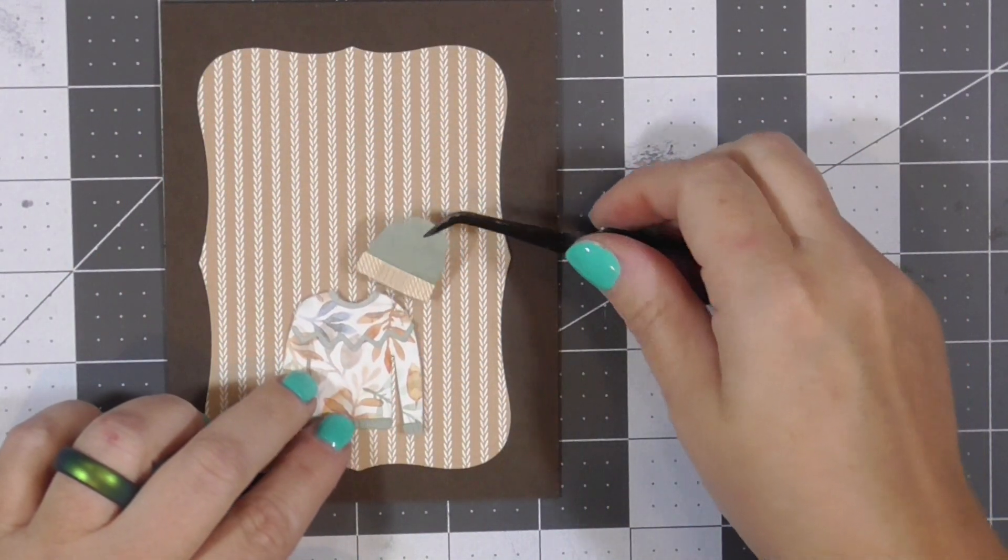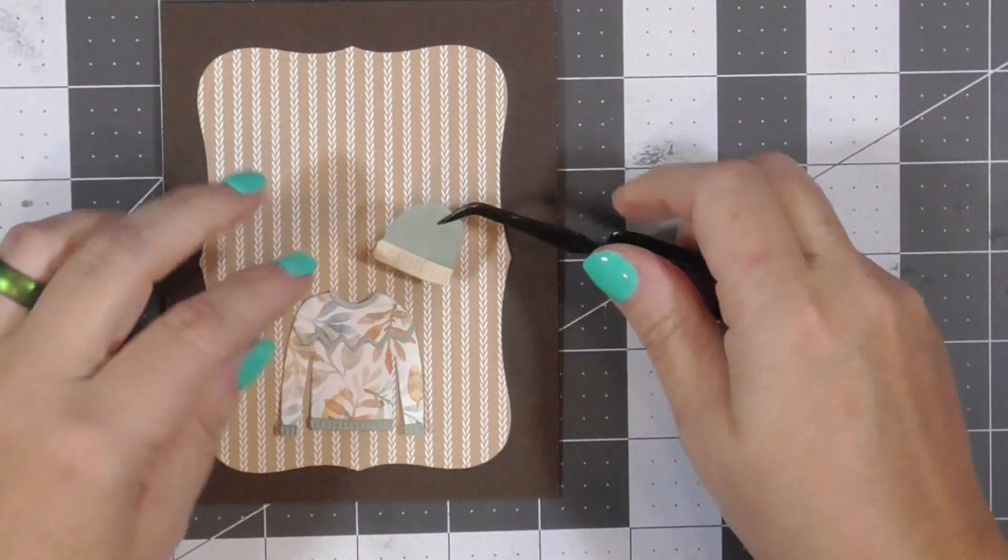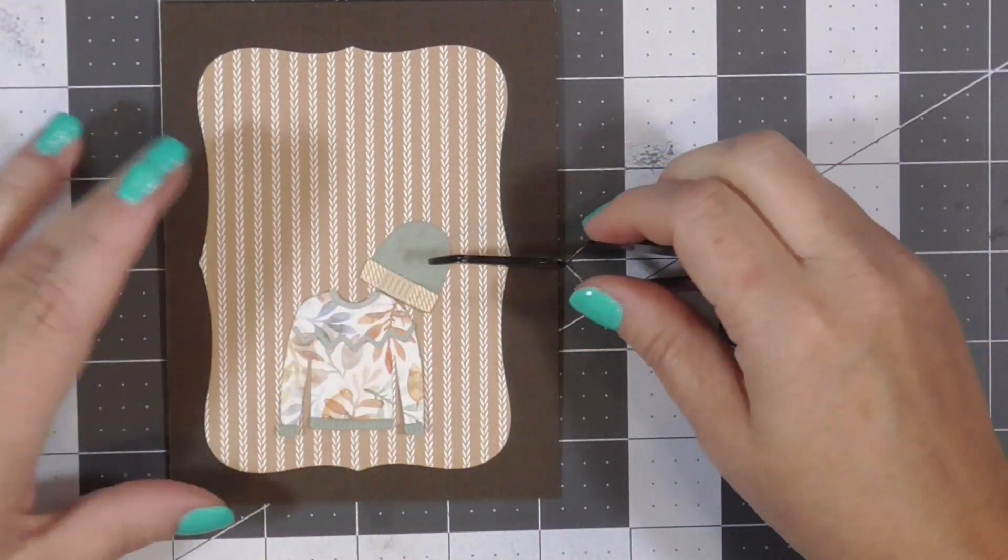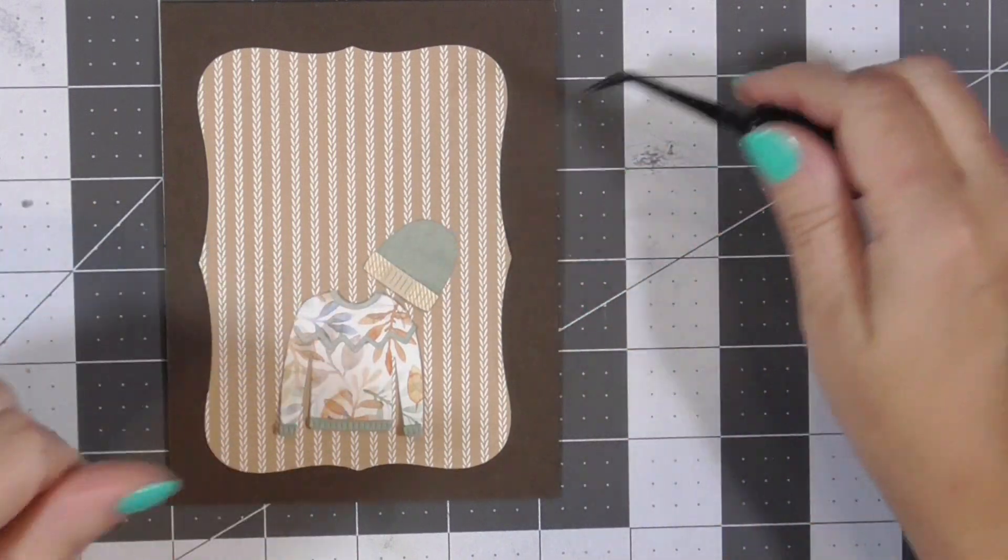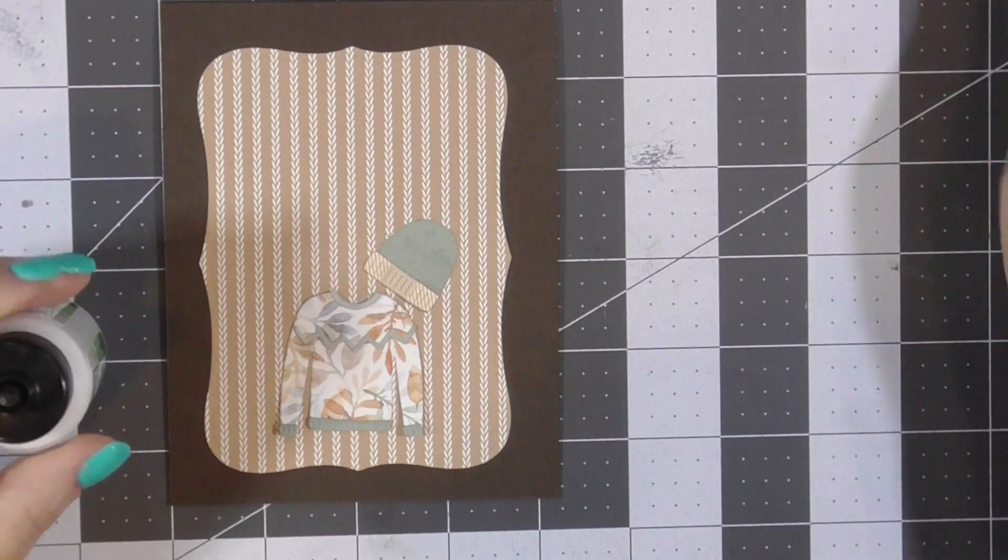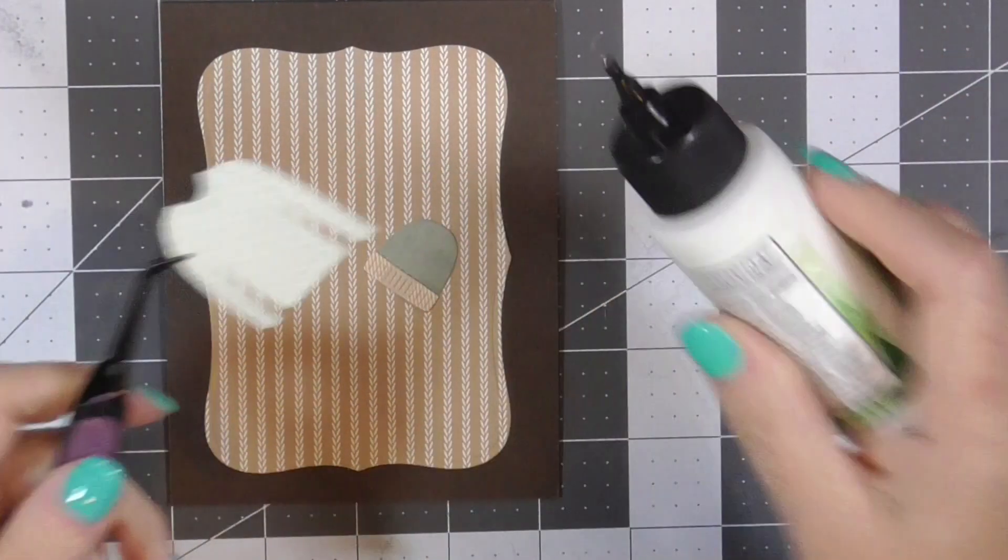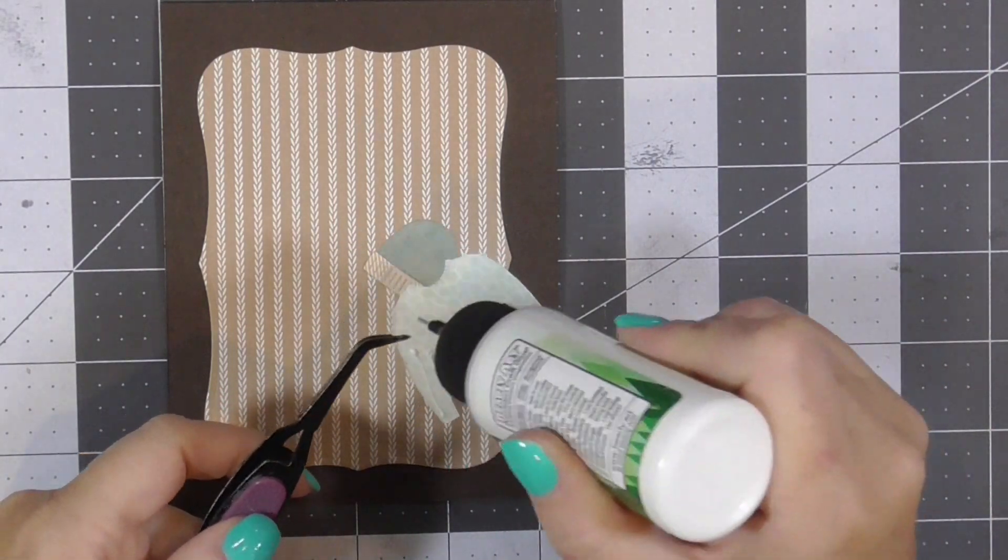One of the dies included in this die set is a little phrase that says bundle up and I did cut that out as well. I use the same dark brown card stock as the card base. So it'll pull it all together.